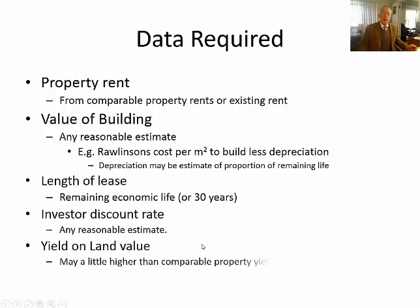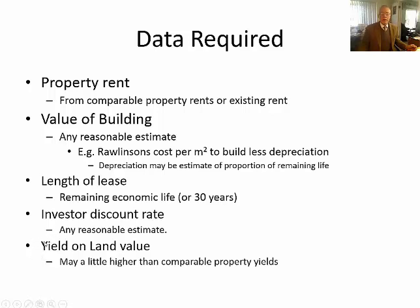The last number you need to calculate is the yield on the land value. All of the above values are there so that you can work out the ground rent. How do we turn the ground rent into the land value? Very simple — we capitalise. Capitalisation is straightforward: you simply divide the rent by the yield, which all of you should be familiar with by now. To do that division, assuming you have the ground rent from processing all the above numbers, you need the yield on the land value. It's relatively straightforward to get the yield on the property by looking at comparable sales with tenanted properties.